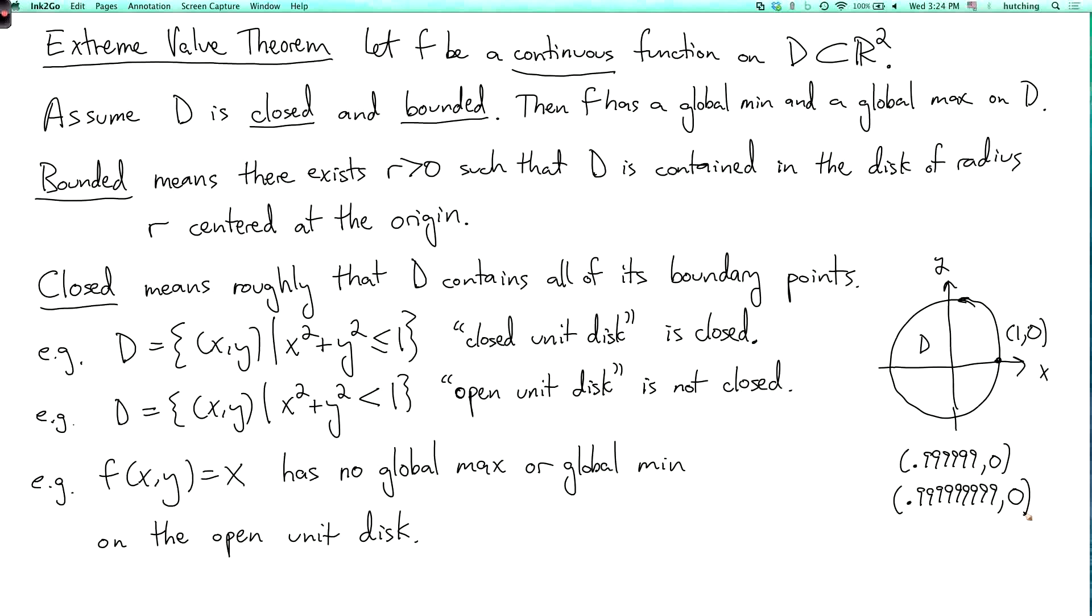So on the closed unit disk, 1 is the largest value of f. But there does not exist any second place largest value. So once we remove the point 1 comma 0, there's no global maximum.